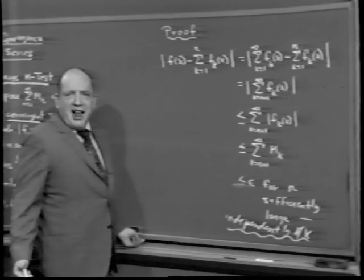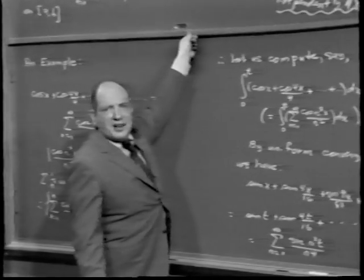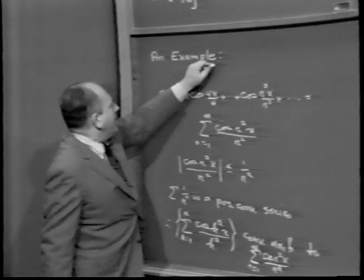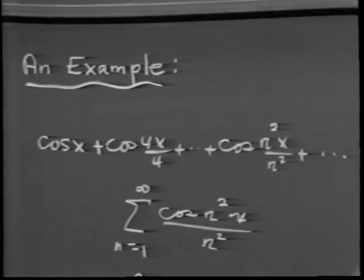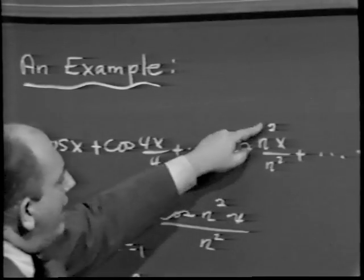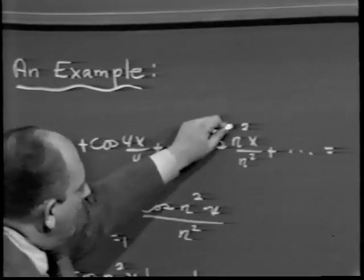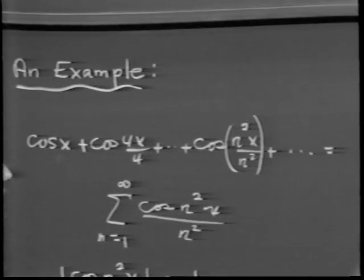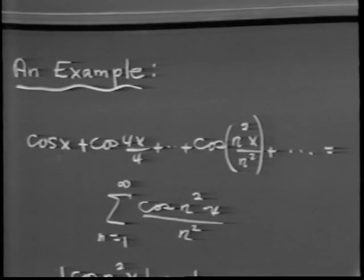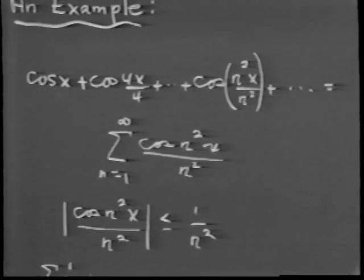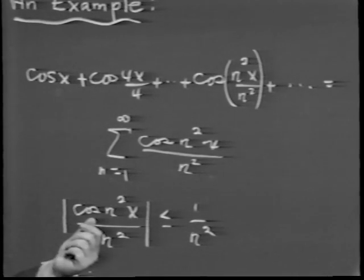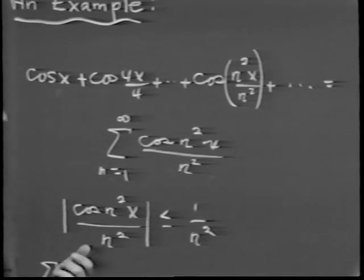By means of an example — after doing these abstract things, a nice example shows what's going on very nicely. Let's look at the following series: cosine x plus cosine 4x over 4 plus, et cetera, cosine n squared x over n squared, where n is the number of the term. For example, the third term would be cosine 9x over 9. Is this a convergent series? Is it absolutely convergent? Is it uniformly convergent?